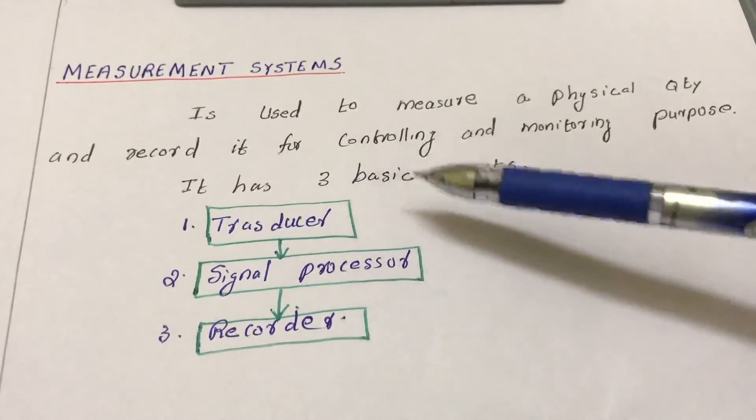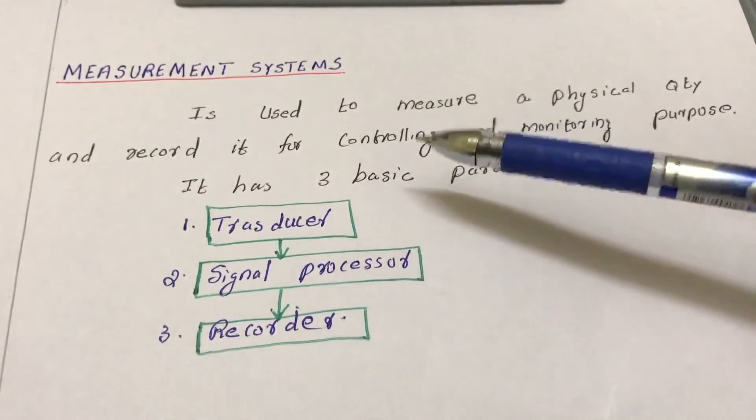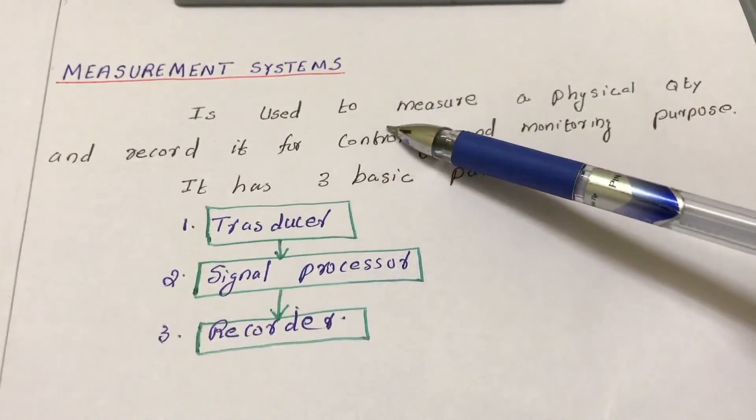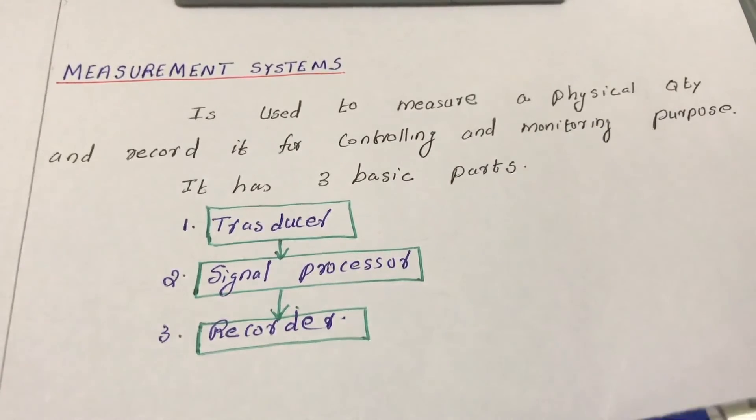This is the basic overview of what a measurement system does. Once more, it is used to measure a physical quantity and record it for controlling and monitoring purposes. Thank you.